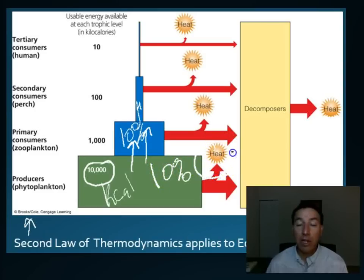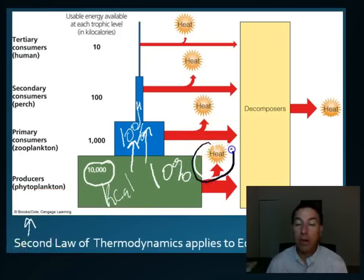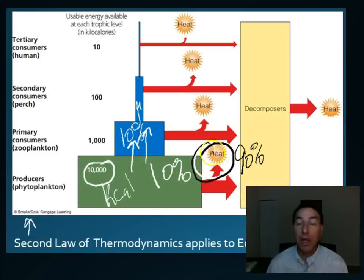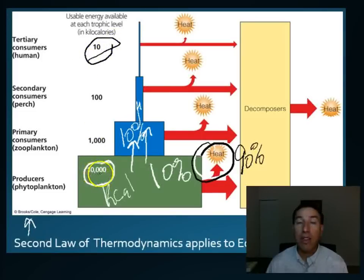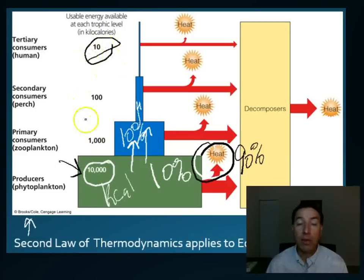Where does the remaining 90% go from each level? Most of that energy loss occurs as heat — 90% of the energy locked up in the producers is lost as heat to the ecosystem, never to be gained again. So energy efficiency is very poor. Out of our original 10,000 kilocalories, the top-level consumers only have 10 kilocalories left. This is one reason why you have very few organisms at the top trophic levels and most organisms are down here as primary producers. This is why you see way more zebra than lion, and way more fish than sharks — all because energy transfer is very inefficient.